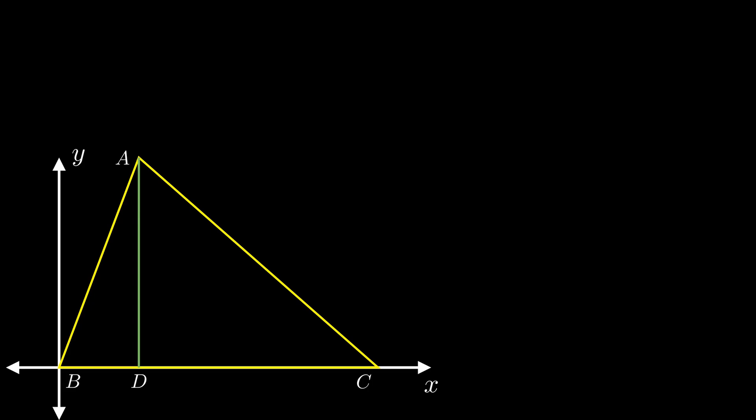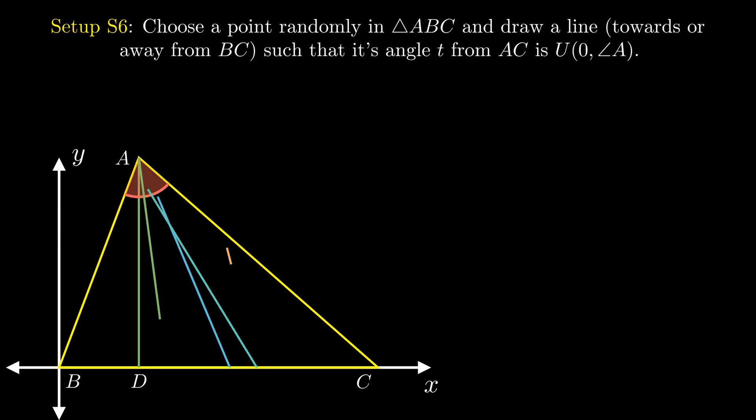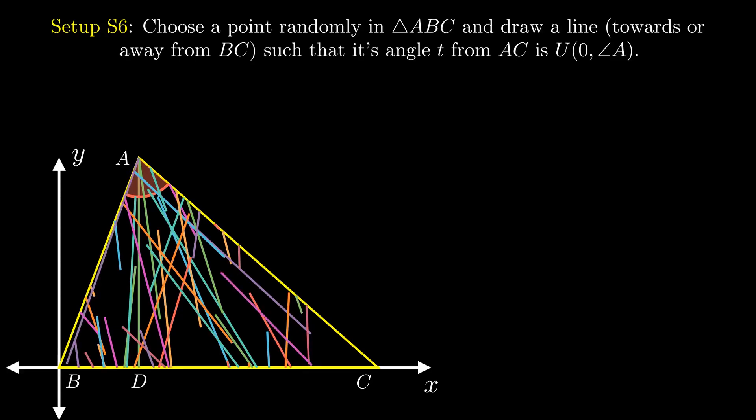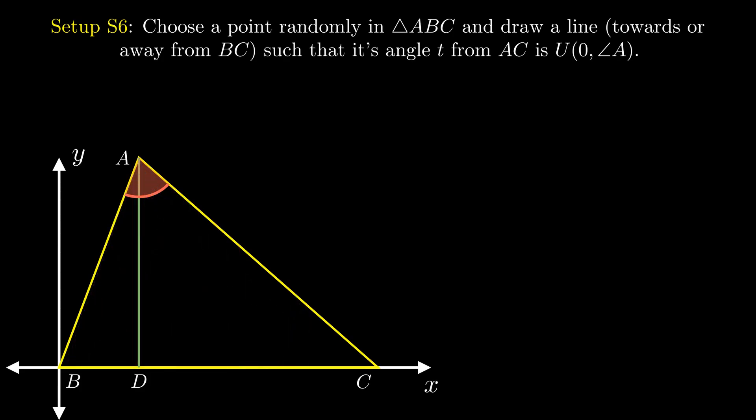For the next setup, we extend this angle to cover the whole of angle A. That is, we choose a point inside the triangle ABC and draw a line such that the angle T between the random line and the side AC is uniformly distributed between 0 to angle A. This is simple. Just divide the interval along the altitude AD.